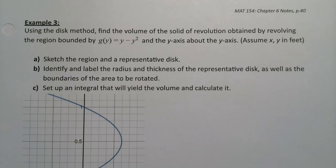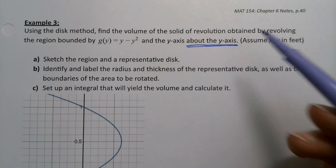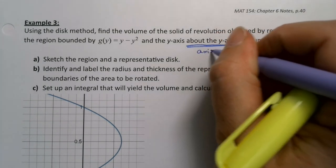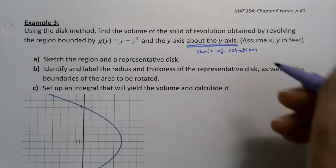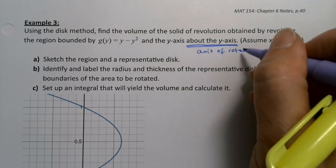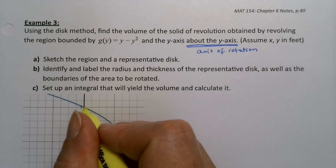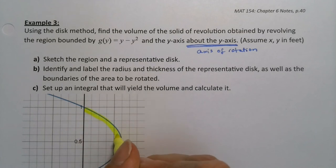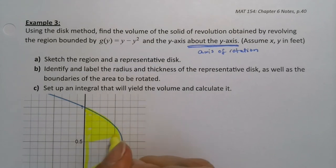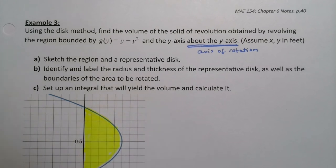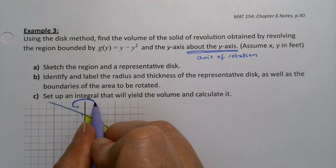We just rotated around the x-axis, so naturally we want to rotate one about the y-axis. This tells us that this is our axis of rotation, which will make things a little bit different because we're not so comfortable with dealing with an axis of rotation of y. We're going to take the region bounded by g(y) which is y minus y squared, and we're going to rotate it around the y-axis. To notate that y-axis rotation, I will of course put my arrow right up here on the y-axis.